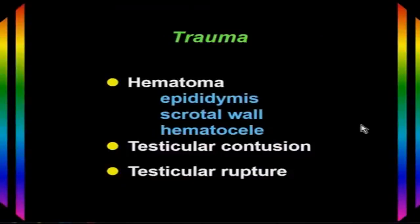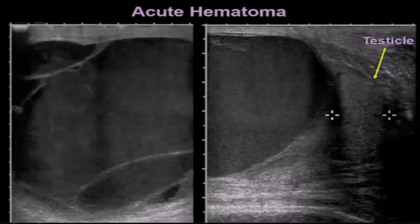Because of the scrotum's location, it is at risk for direct trauma. After trauma, a hematoma may be found in the scrotum — in the epididymis, the scrotal wall, or forming a hematocele. In addition, the testicle may be damaged with a contusion or a rupture.